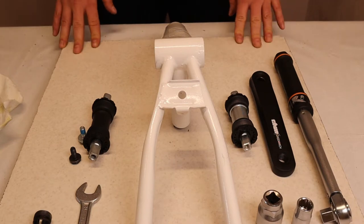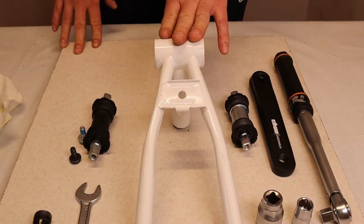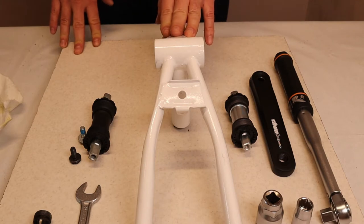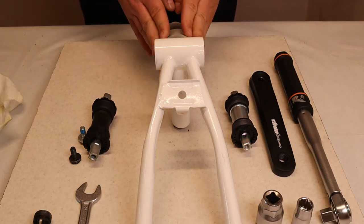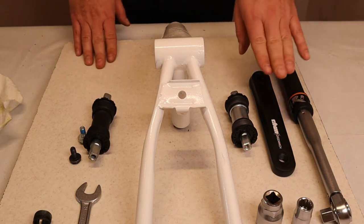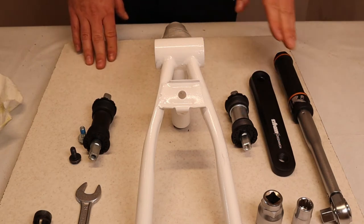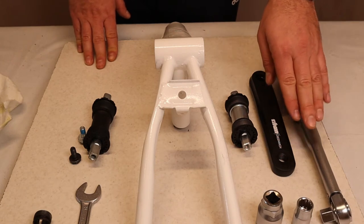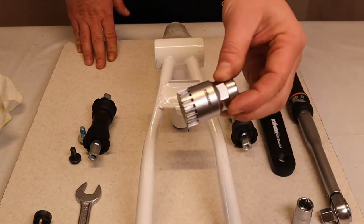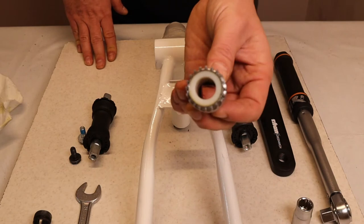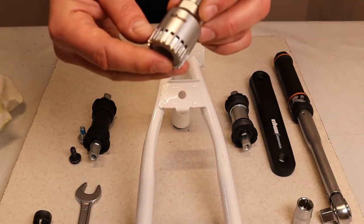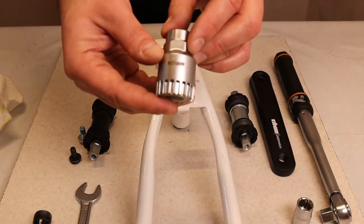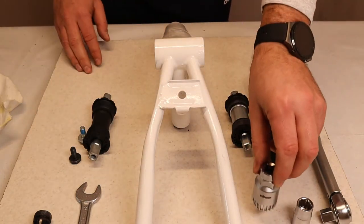So what we have here is a standard steel frame with 68 millimeter BB housing. We have Tune BBs and crank with the tools needed. So here I have the torque wrench, I have the easy fit tool which makes the assembly much easier due to the nylon insert which holds the tool in place. It's available with Tune.